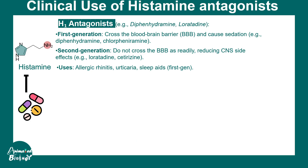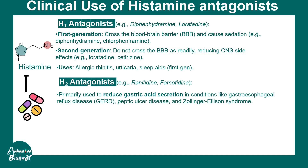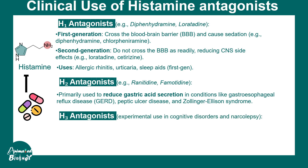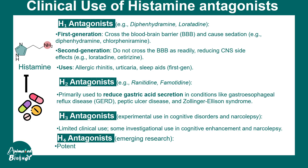H1 antagonists are used for allergic rhinitis, general allergies, urticaria, and as sleep aids. H2 antagonists such as ranitidine and famotidine are used to reduce gastric acid secretion and are important for patients with peptic ulcer disease or Zollinger-Ellison syndrome. H3 antagonists are experimentally used in cognitive disorders like narcolepsy with very limited clinical use, while H4 antagonists are used in emergency situations for severe asthma, pruritus, and chronic inflammatory disease.